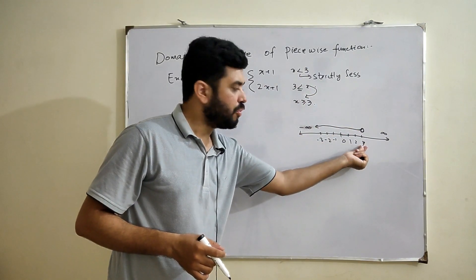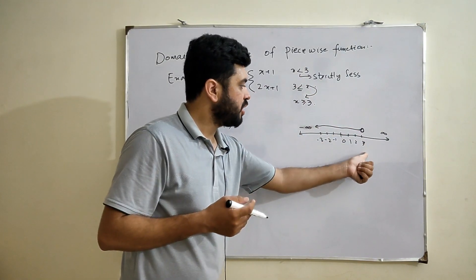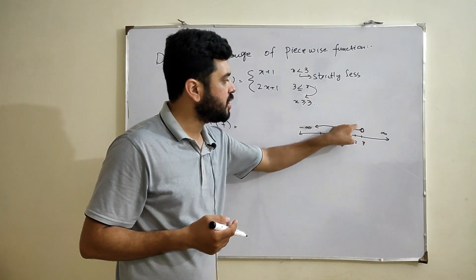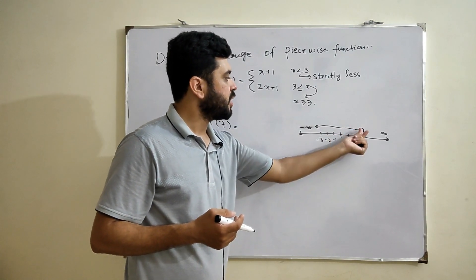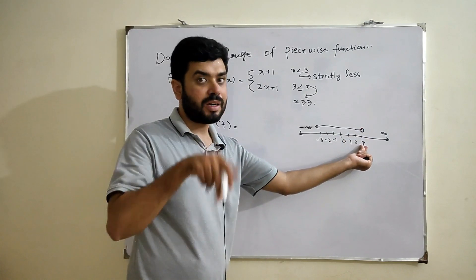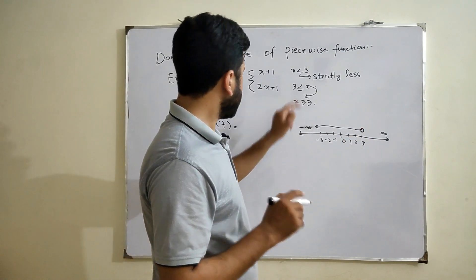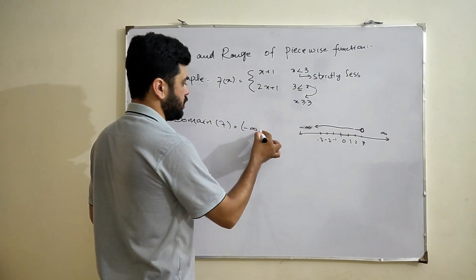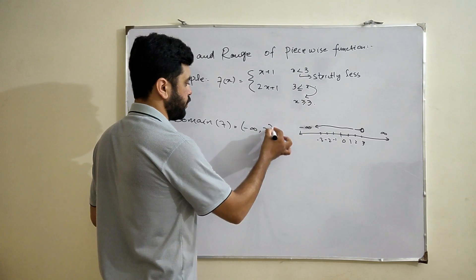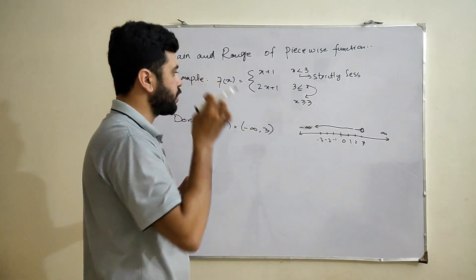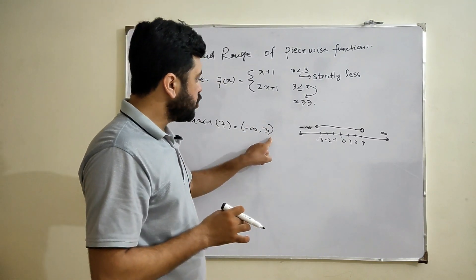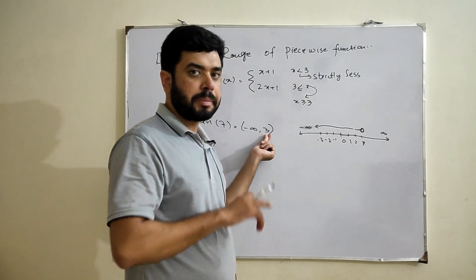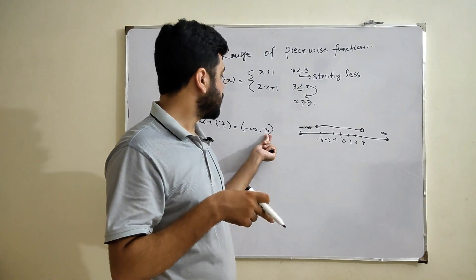x less than 3 means we move from 3 towards lesser values, and 3 will not be included. The open circle represents that this value is not included. So the first part of the domain goes up to 3 with an open interval.